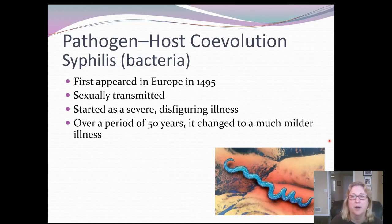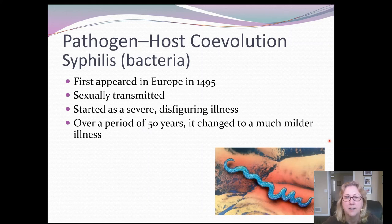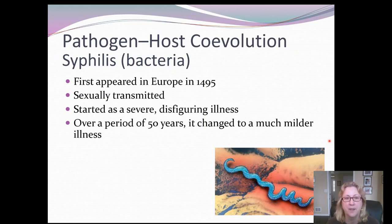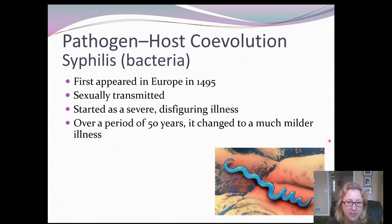A good example of pathogen-host co-evolution is the story of syphilis. Syphilis was a new disease in Europe, first noticed around 1495. Take note of that year — it's suspicious for the origin. It appeared to be sexually transmitted, and at first it was a very severe, disfiguring disease.